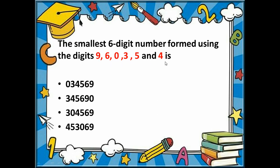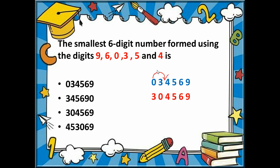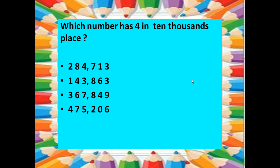The next question asks for the smallest six-digit number using the digits 0, 3, 4, 5, 6, and 9. We arrange the digits in ascending order: 0, 3, 4, 5, 6, 9 — but this is only a five-digit number. To make a six-digit number, we shift the zero to the second place, after the 3. So the correct answer is three lakh four thousand five hundred sixty-nine (3,04,569).